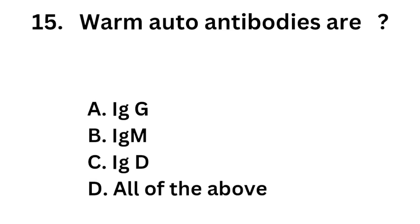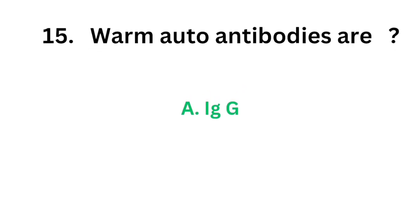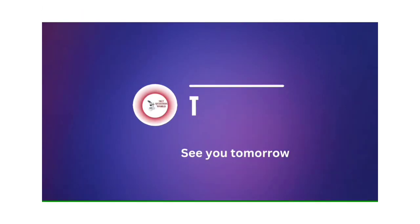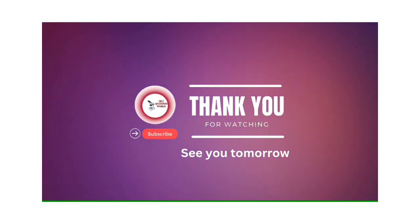Question 15. Warm auto-antibodies are: Option A, IgG; Option B, IgM; Option C, IgD; Option D, All of the above. The correct answer is Option A, IgG. Thank you for watching. See you tomorrow.